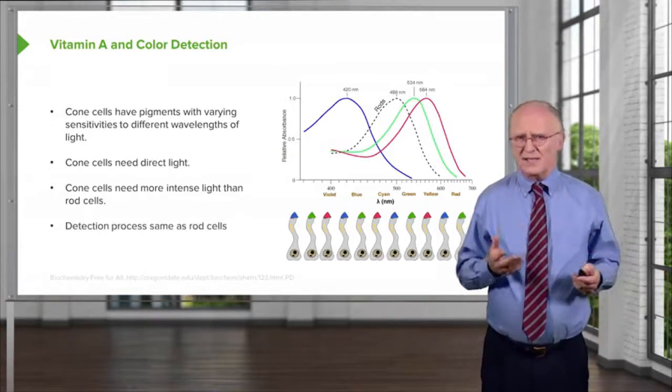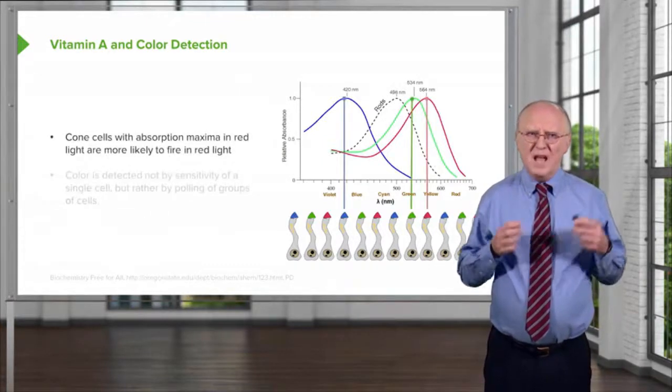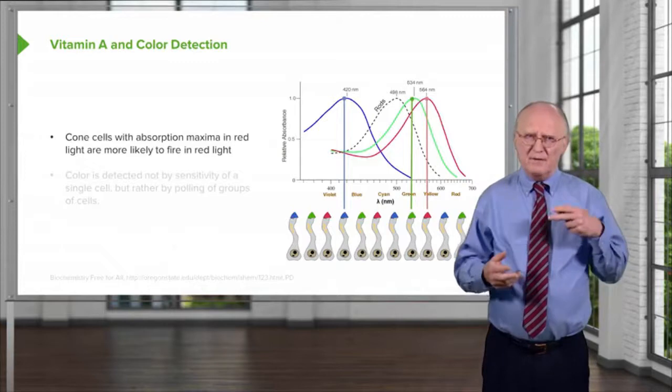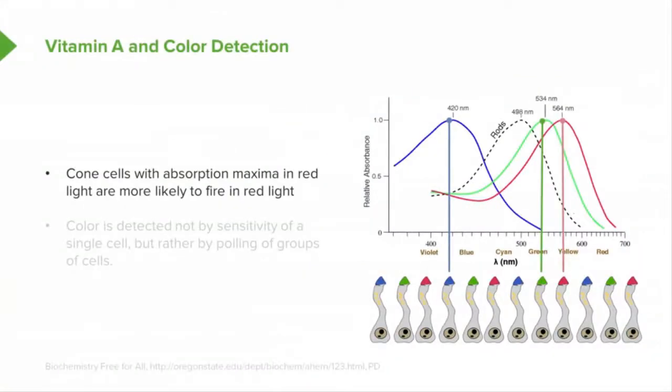The detection process is pretty much the same. Now, the cone cells that have various maxima in the red region, for example, are more likely to fire if they get red light shined upon them, whereas those that have maxima in the green fire when they get green and those in the blue more likely when they get blue.